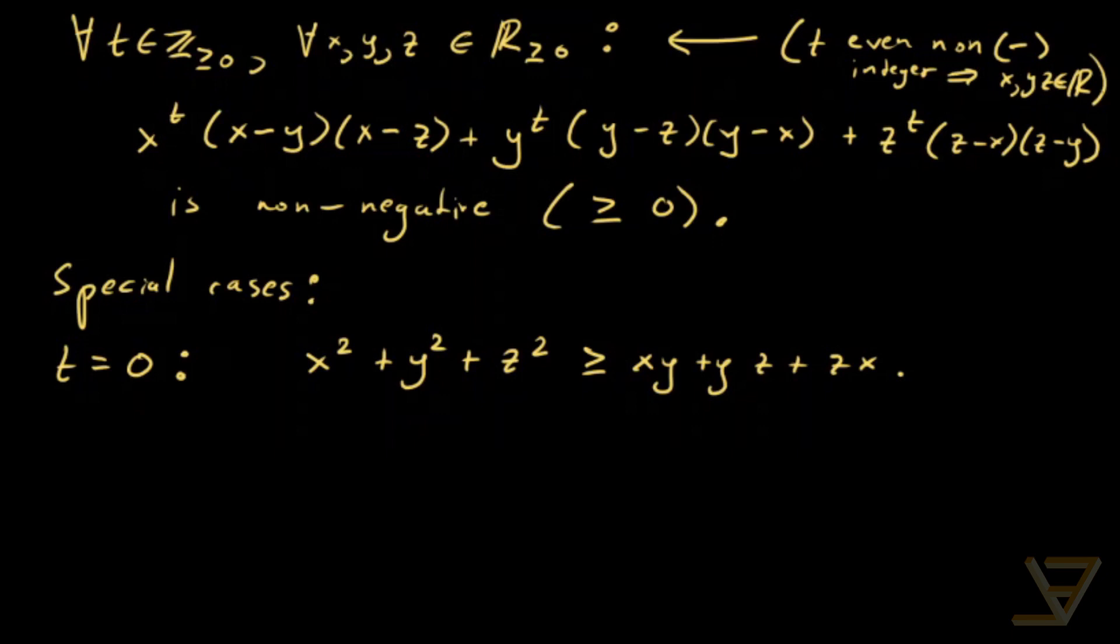So let's look at some more special cases. t equals one can be written in a factored form as xyz ≥ (-x+y+z)(x-y+z)(x+y-z). So that's quite interesting.